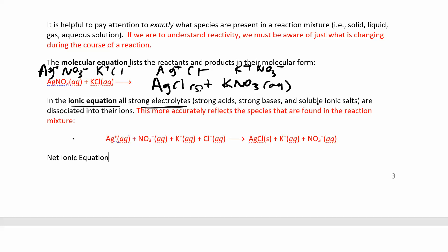We haven't talked about acids and bases yet, so that's the next section. For soluble ionic compounds — ionic means it's a metal and a non-metal, and soluble means it dissociates into ions, which is what makes it an electrolyte. Nitrates are always soluble, potassium is always soluble. I'm going to go through each one of these species and put a star on it if it's a soluble ionic compound. Silver nitrate — nitrates are always soluble.